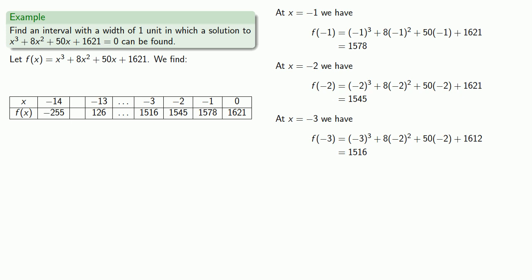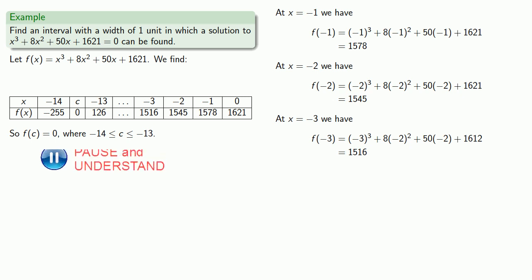Now we can apply the Intermediate Value Theorem, or the Goldilocks Principle. At negative 14 we're too small; at negative 13 we're too big, so some place in between we're going to be just right. That means f(c) equals 0 for some c between negative 14 and negative 13.